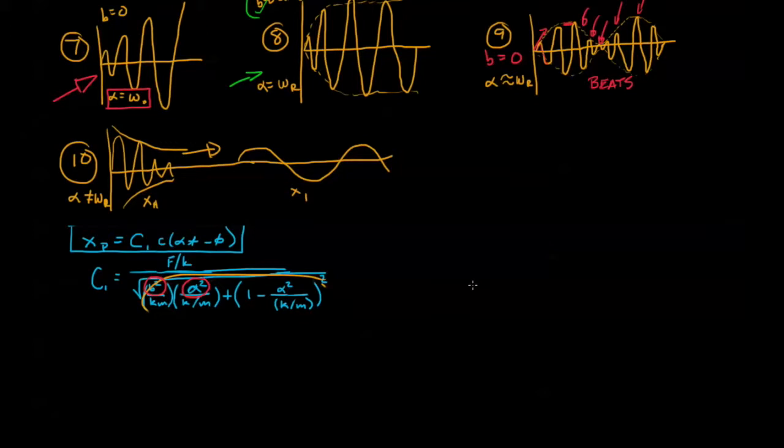What a lot of people want to understand is the relationship between the forcing amplitude and the system response. And so what they do is they assign a variable, g for gain, and that is c1 over here, this coefficient that is an indicator of a particular solution, and they divide it by f over k.